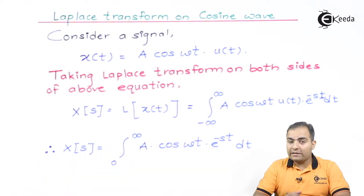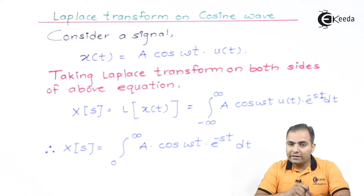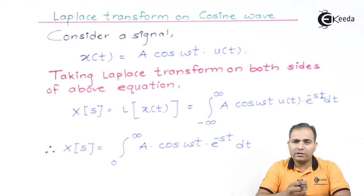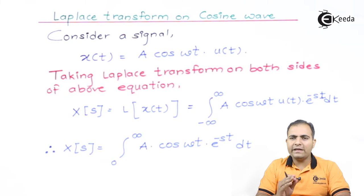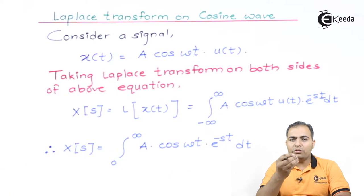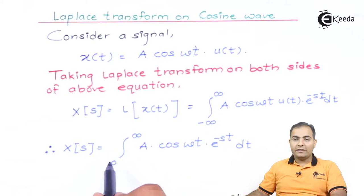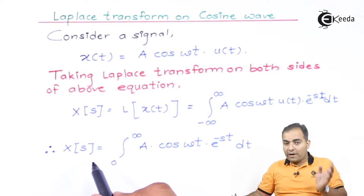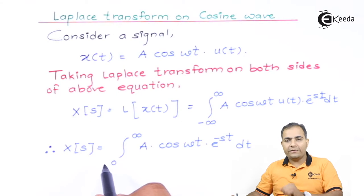I have substituted limit values according to the definition of unit step. The unit step has amplitude 1 only from 0 to infinity. That's why this integration limit starts from 0 to infinity. As I mentioned in previous cases, in exams, if the unit step function is given and you want to find the Laplace transform, the unit step is always there to change the limit of integration from minus infinity to infinity to 0 to infinity.